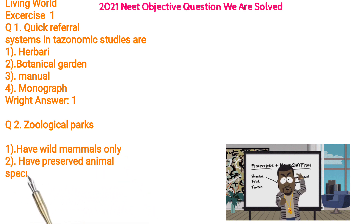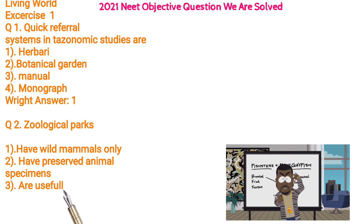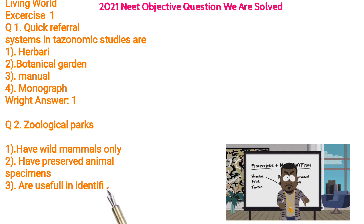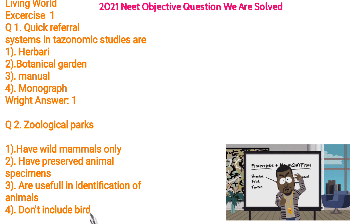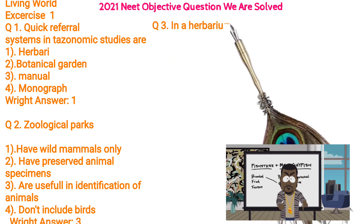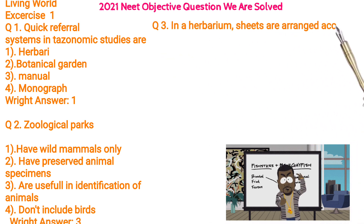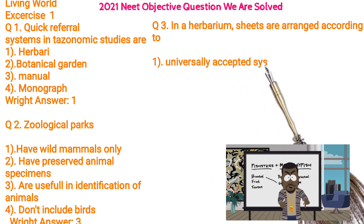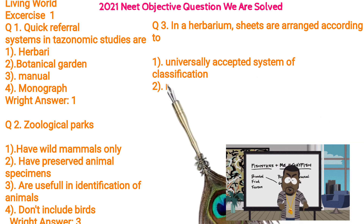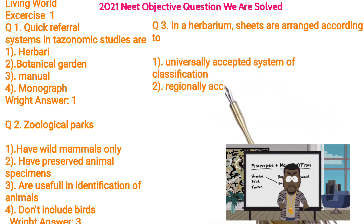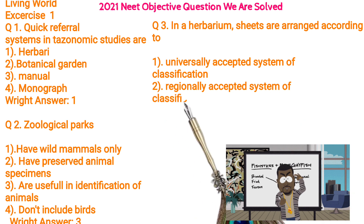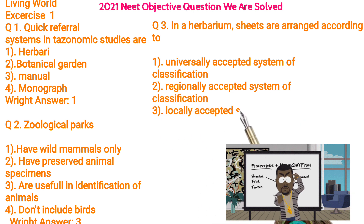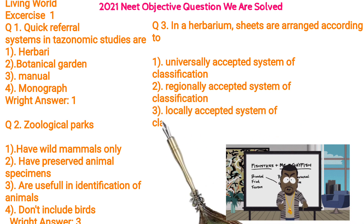Right answer: 3. Q3: In a herbarium, sheets are arranged according to — 1. Universally accepted system of classification. 2. Regionally accepted system of classification. 3. Locally accepted system of classification.